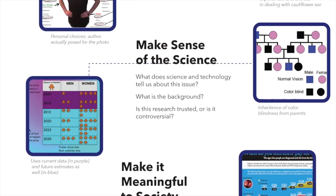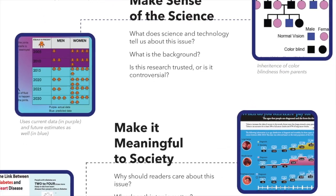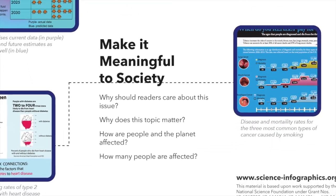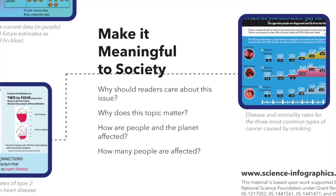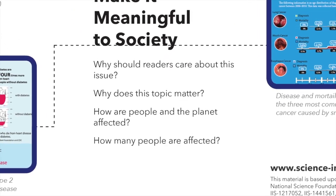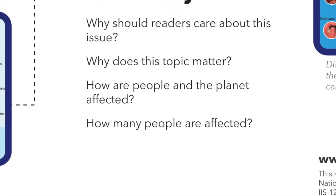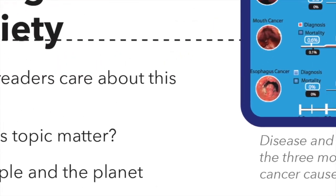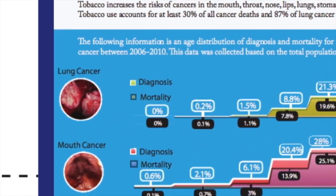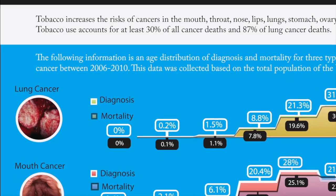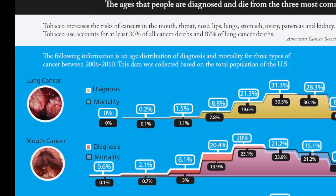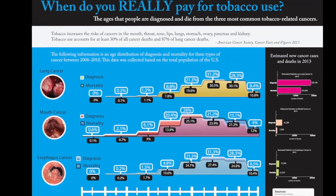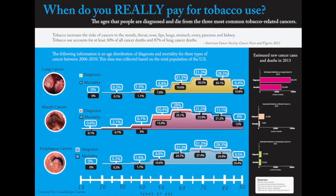In order to reach their audience, students must communicate how their topic matters to other people with questions such as, how are people affected, and how many people are affected? This author represented disease and mortality rates for the three most common types of cancer caused by tobacco use.